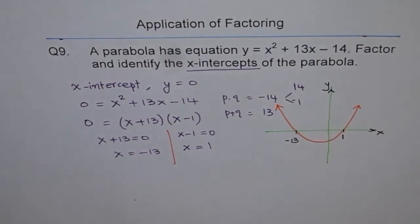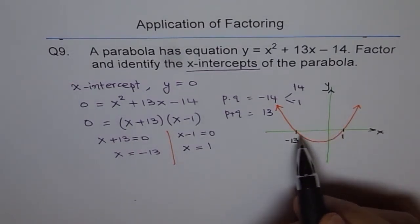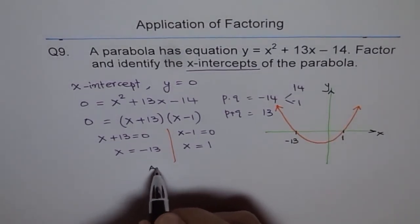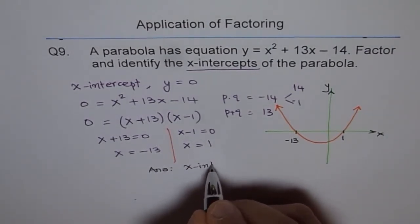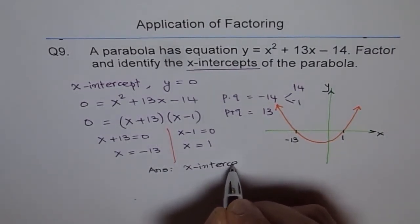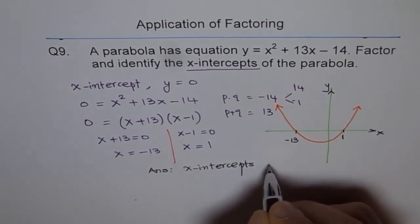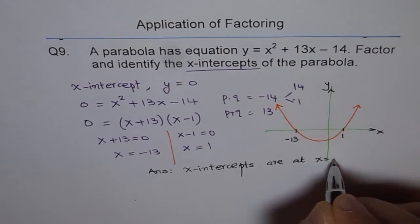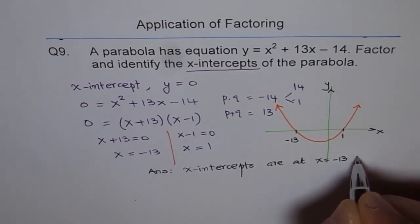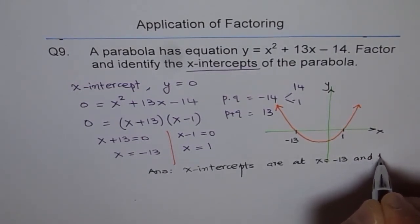where this point is -13 and this point is +1. That's the x-axis and this is y. So that is how the parabola looks, and these are the points we're looking for. The answer is: x-intercepts are at x = -13 and x = 1.